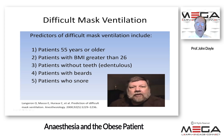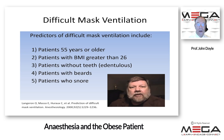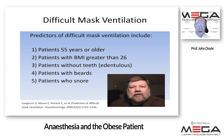Difficult mask ventilation is something we are all familiar with in the obese patient. In a study by Lancheron, predictors of difficult mask ventilation were: age over 55, BMI over 26 (overweight or obese category), edentulous patients, patients with beards, and patients who snore. In such patients it is very common to go directly to an oropharyngeal airway or sometimes a nasopharyngeal airway before attempting mask ventilation.